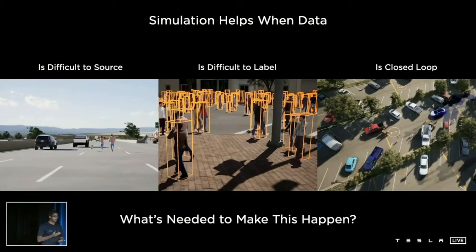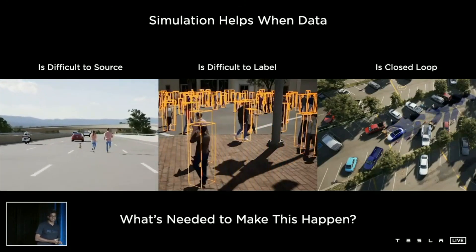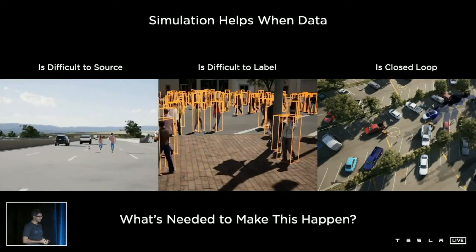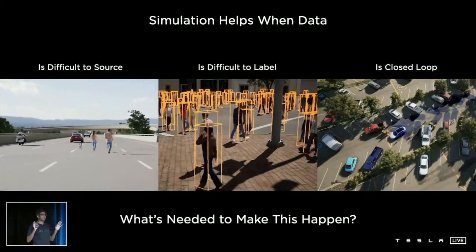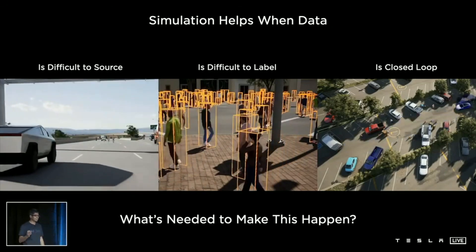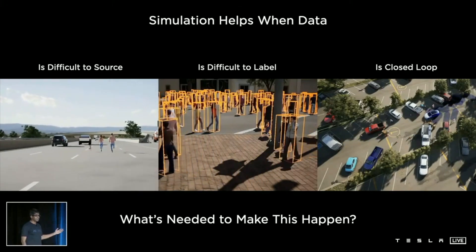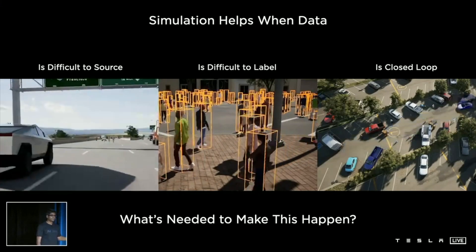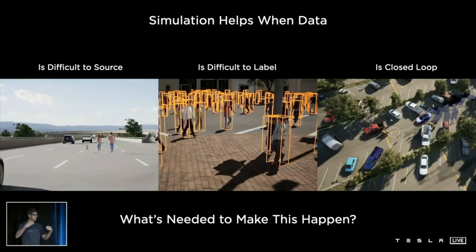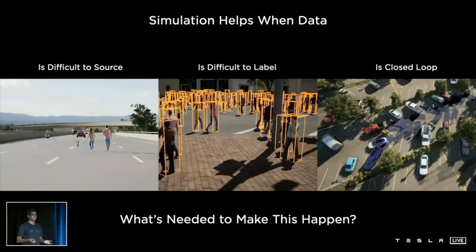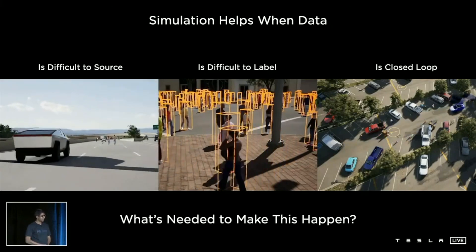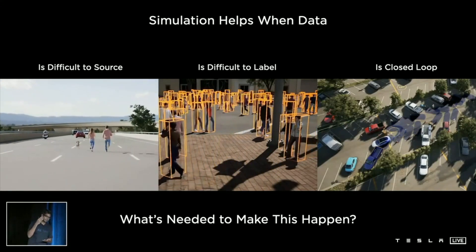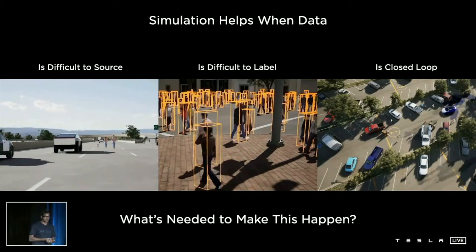When does simulation help? First, when the data is a difficult resource. As large as our fleet is, it can still be hard to get rare scenes like a couple and their dog running on a highway with high-speed cars around — a rare scene, but Autopilot still needs to handle it. When data is difficult to label — like hundreds of pedestrians crossing a road in downtown Manhattan — it could take several hours for humans to label this clip, and even automatic labeling algorithms struggle with associations and velocities. In simulation, this is trivial because you already have the objects and just spit out the cuboids and velocities. Finally, for closed-loop behavior where the car needs to be in a deterministic situation and the data depends on the actions, simulation is pretty much the only way to get it reliably.